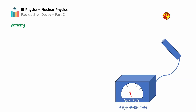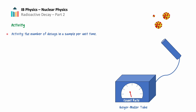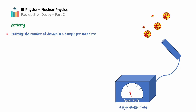In Radioactive Decay Part 1, we briefly touched on activity, noting that activity is the number of decays in a sample per unit time. We will expand on that here. Activity, usually measured with a Geiger-Mueller tube, is a crucial metric in nuclear physics that provides insight into the rate of decay and the stability of a radioactive material.